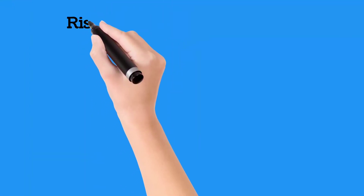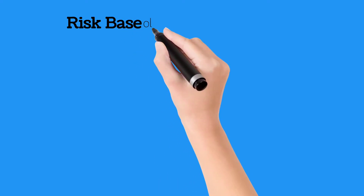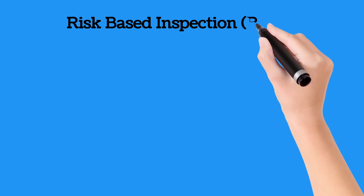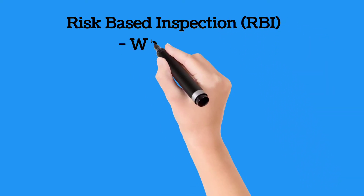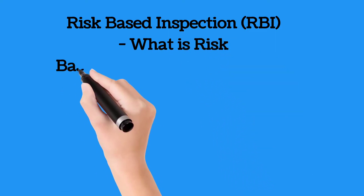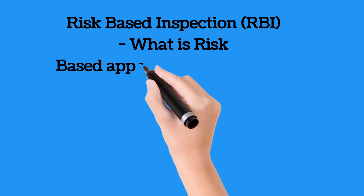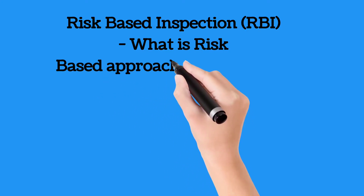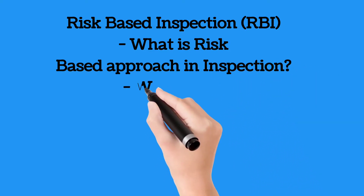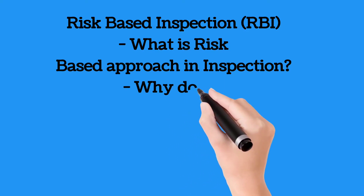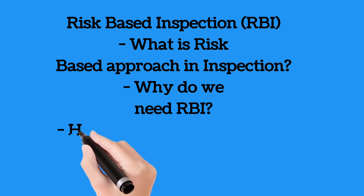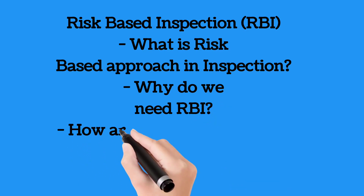Risk based inspection is a very vast study which deals with a huge bulk of information. In this video, we will study about what actually is risk based inspection, RBI. We will also study what is probability of failure and discuss what is consequence of failure. A generic approach on why we need risk based inspection will also be explained, along with how risk based inspections are implemented and how we categorize risk in risk based inspection.